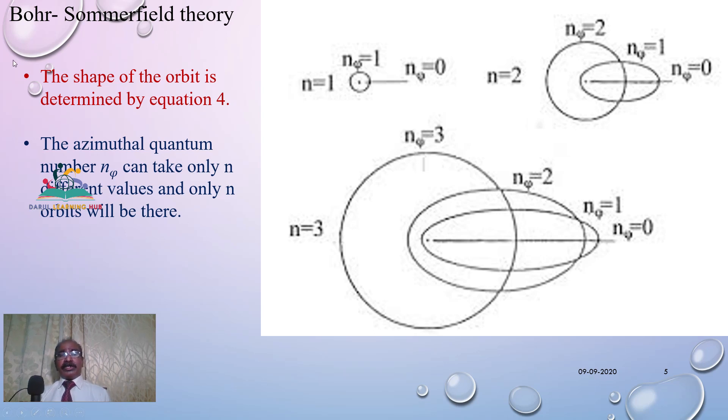This E_n value or this expression is similar to that what we have already derived according to Bohr atom model. And if we could draw the orbits of the electrons, the shape of the orbit will be determined by the equation we have already given in equation number 4.